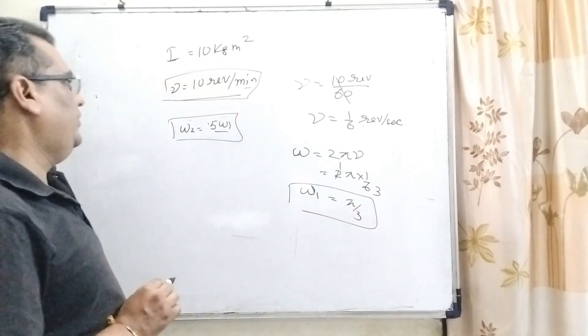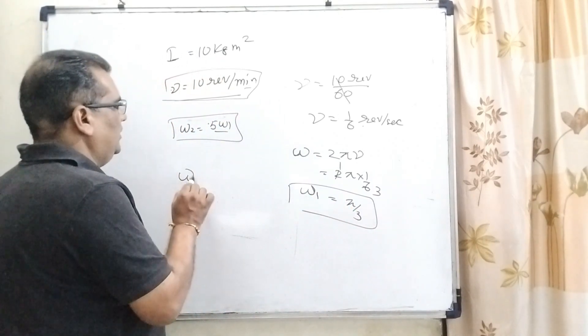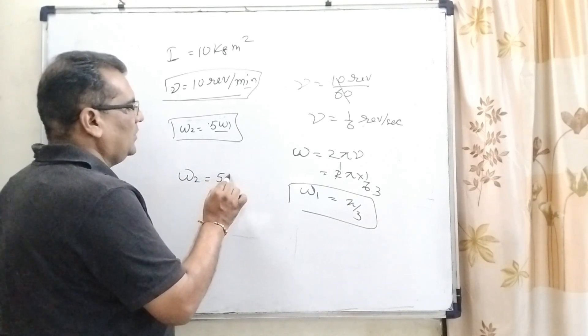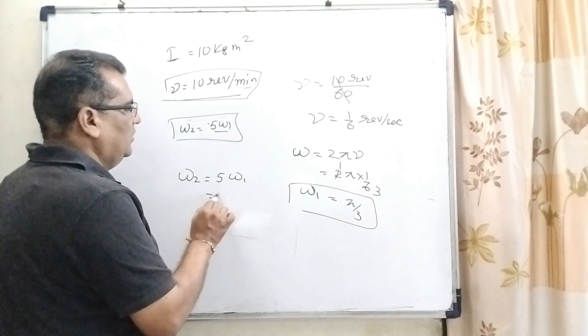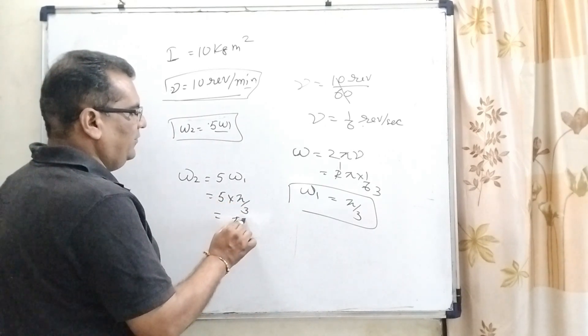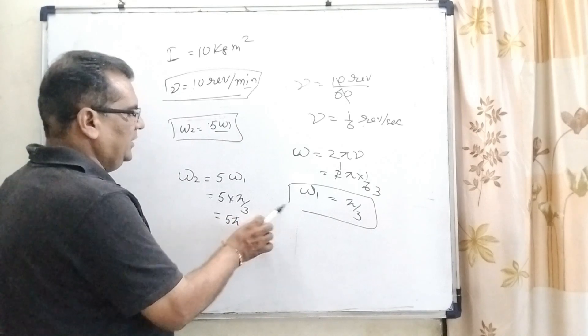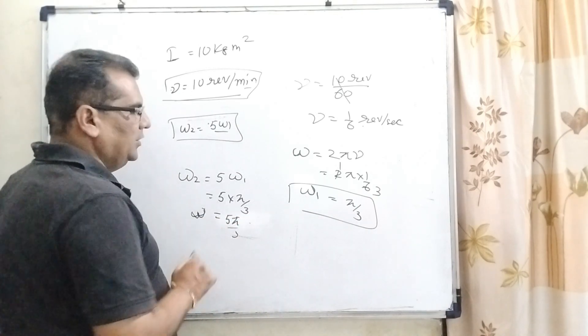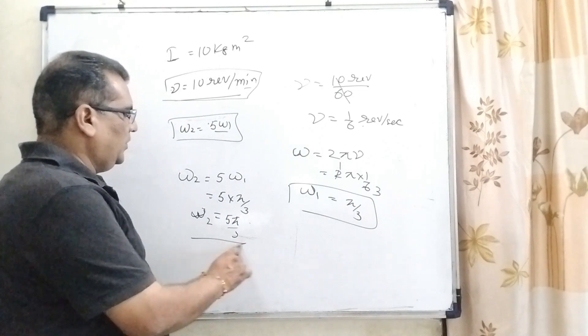Let this angular velocity consider omega 1. But in the question, we have given that final angular velocity is 5 times of initial. It means, 5 into pi by 3, that is, 5 pi by 3 radian per second. So, it is omega 2.